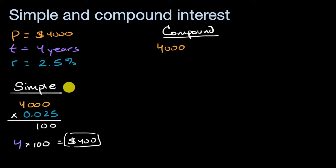the first year is going to look pretty similar because it's going to be 4,000 plus 4,000 times 2.5%, so times 0.025. That's after year one.